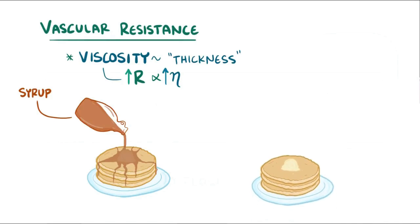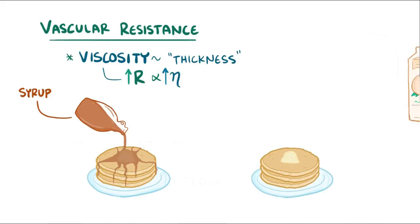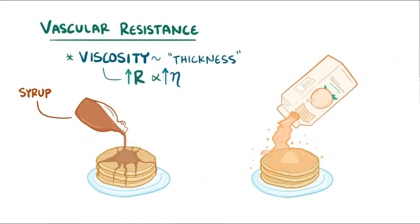Now, say you have another stack, and you grab some orange juice instead, and then you pour. That orange juice immediately comes out and pretty much goes everywhere. This is because the juice is less viscous than the syrup, and so there's going to be less resistance to movement.